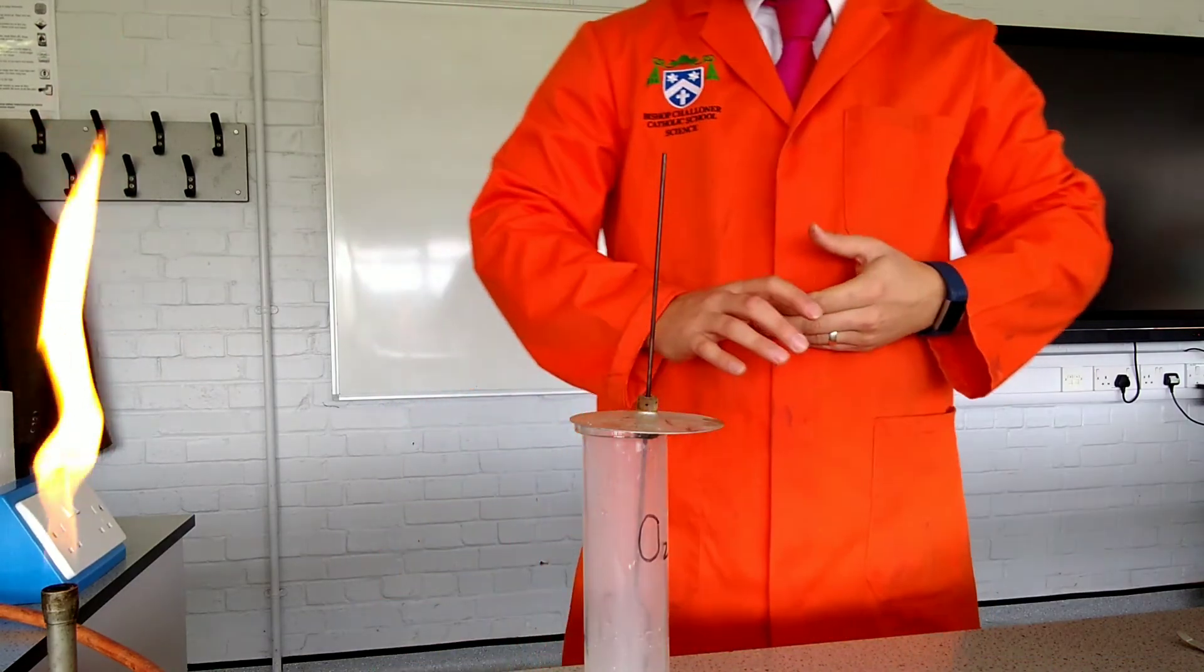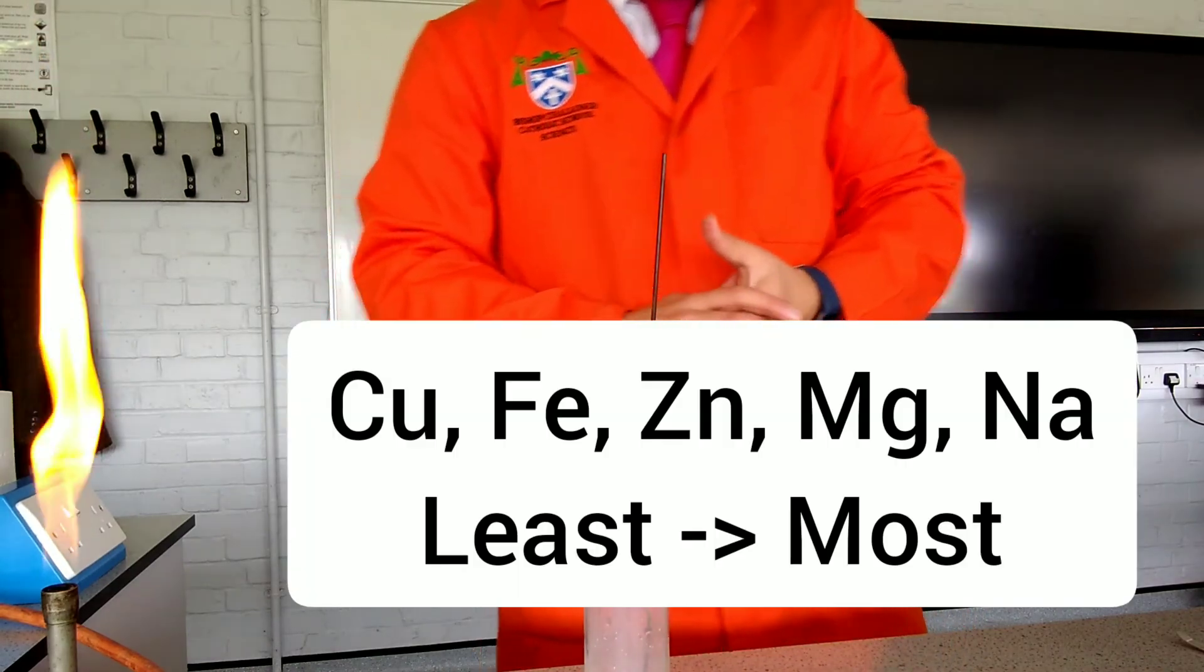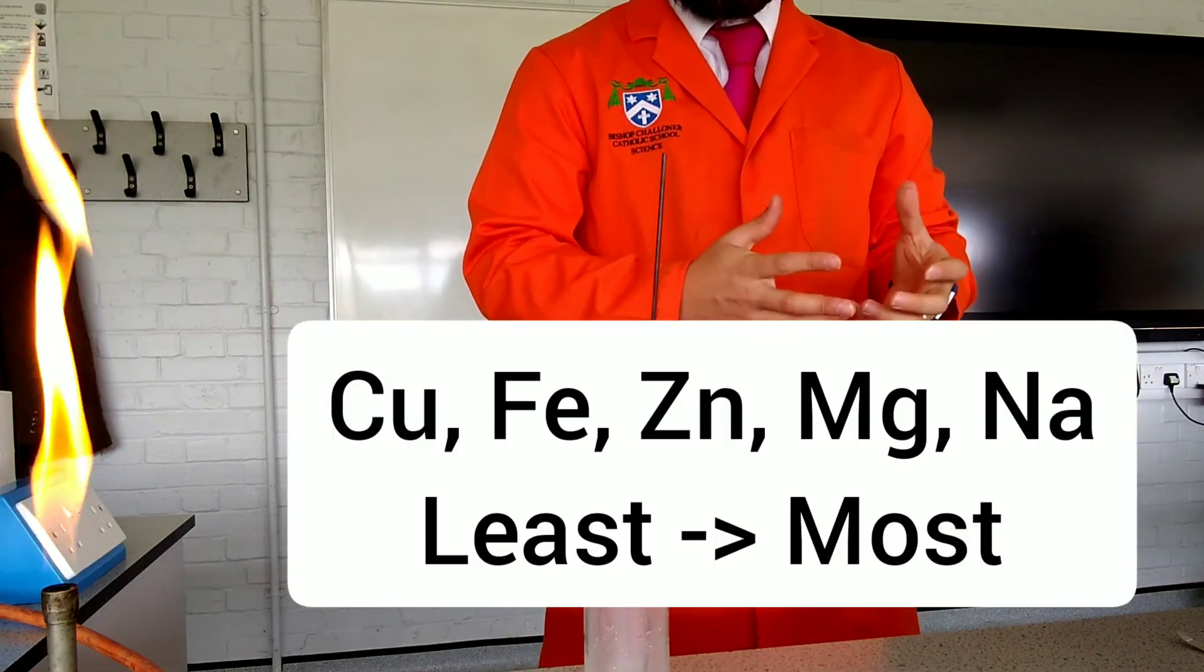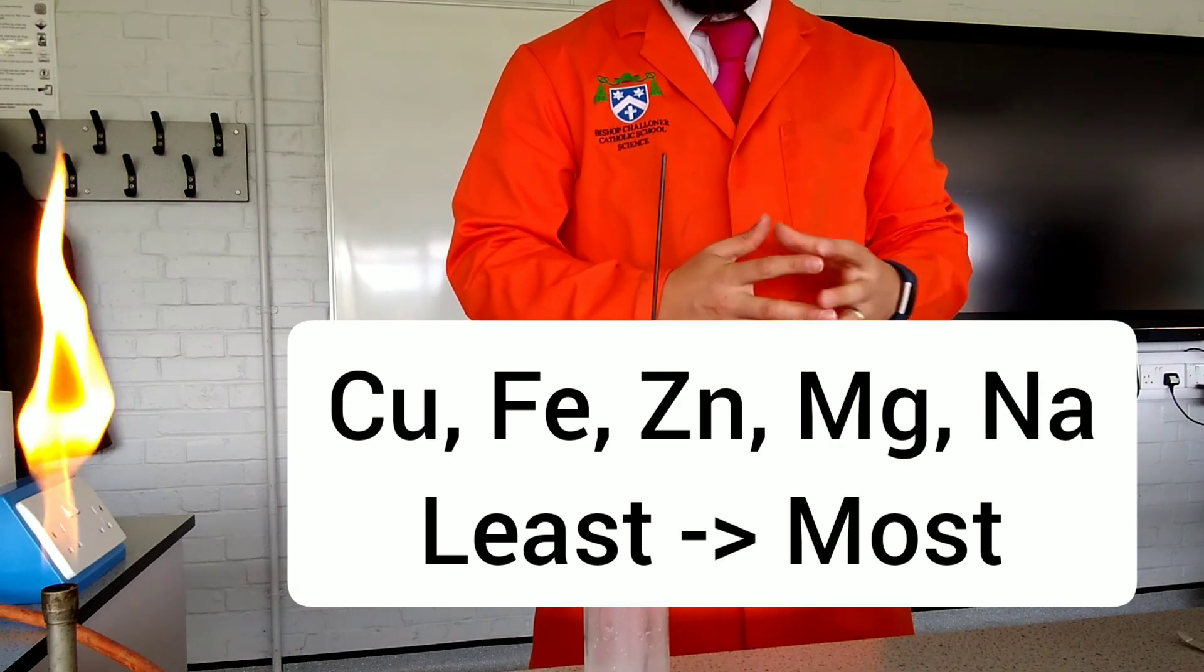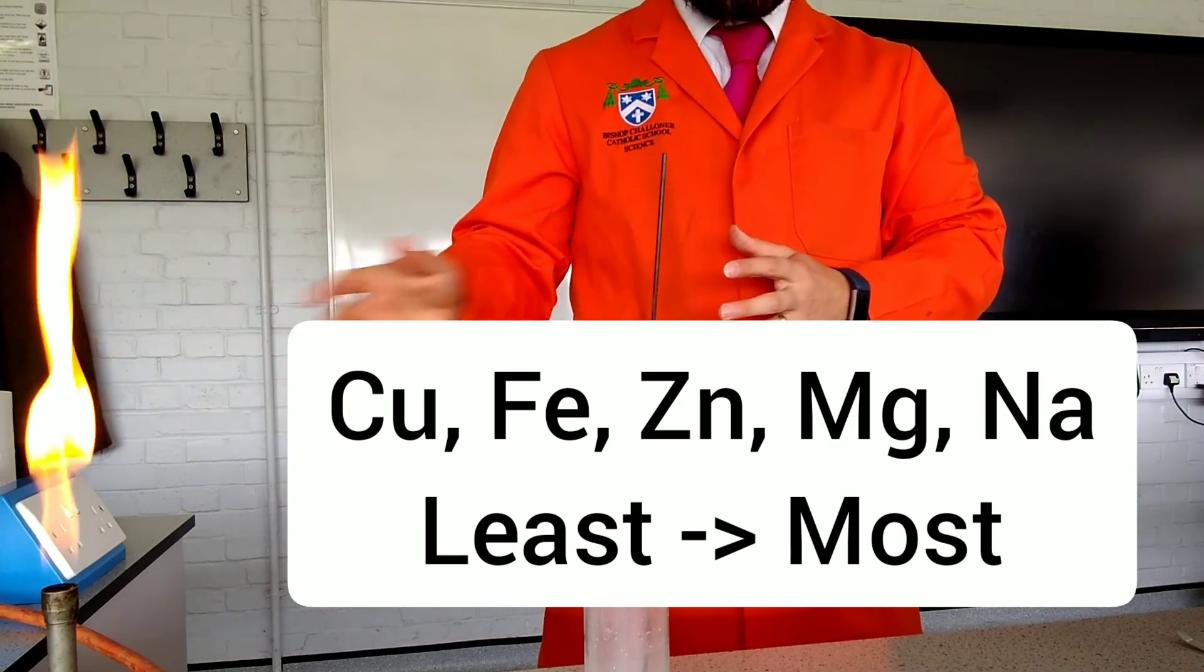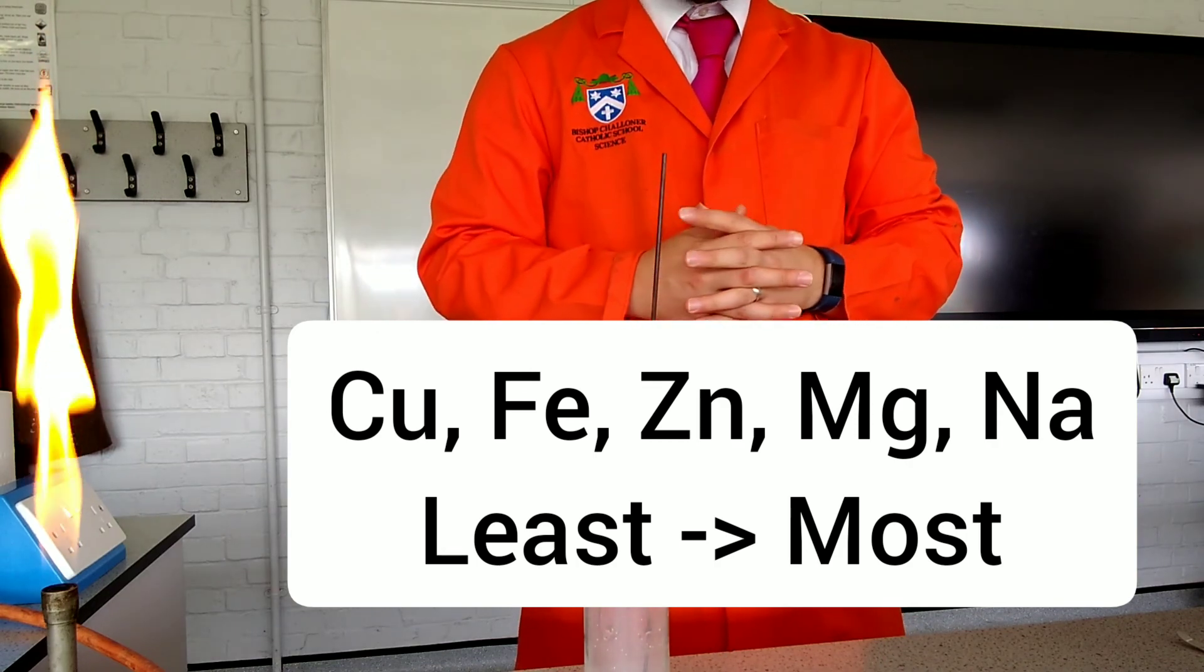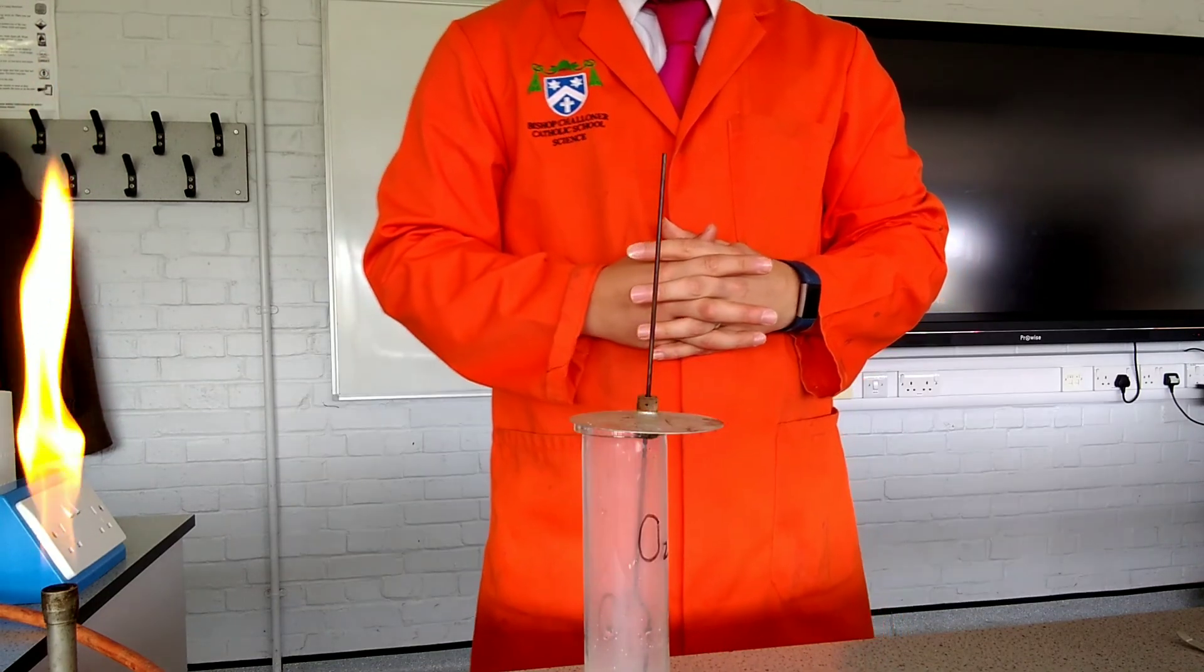So if we were to place these reactions in order, we should have copper as the least reactive, and sodium as the most reactive. Iron appeared to be more reactive than it probably was because the iron wool that we used had a really large surface area.